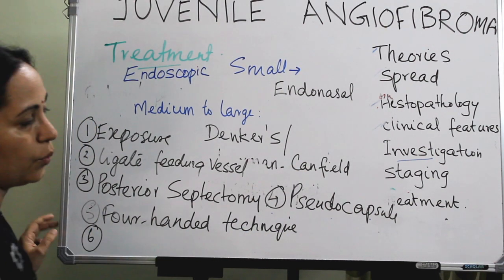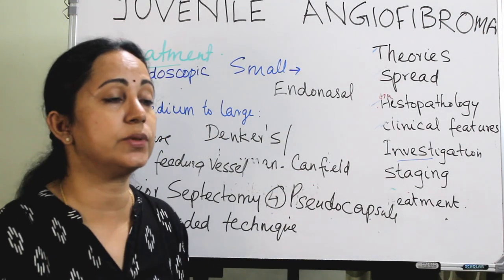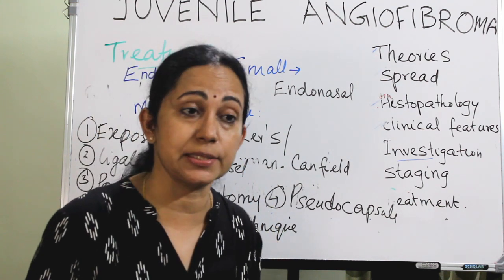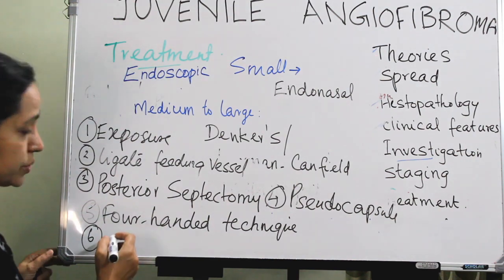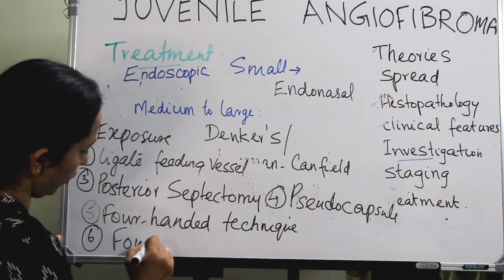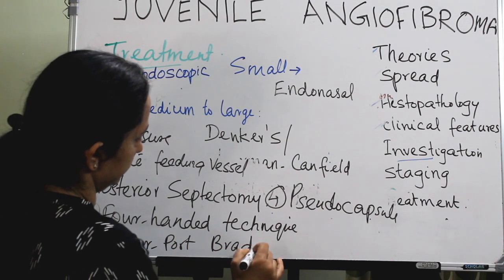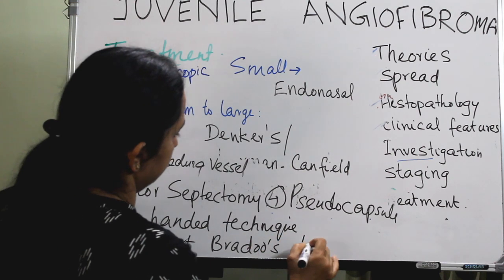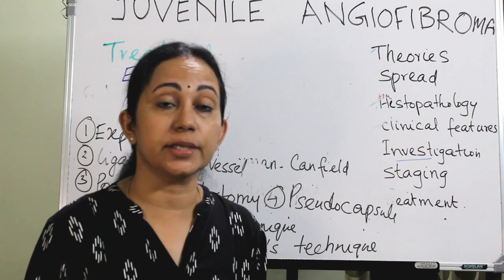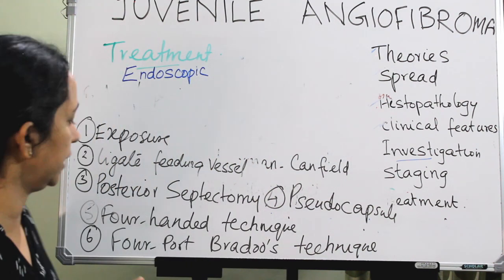For extensive tumors with large lateral extension into the infratemporal fossa or parapharyngeal space, a more extensive approach is needed. At the end of the procedure, drill the pterygoid base to minimize recurrence of JNA — this is very important.